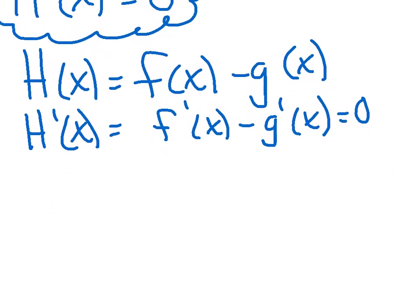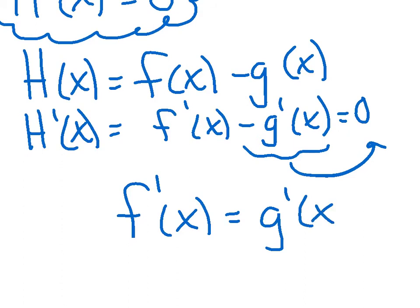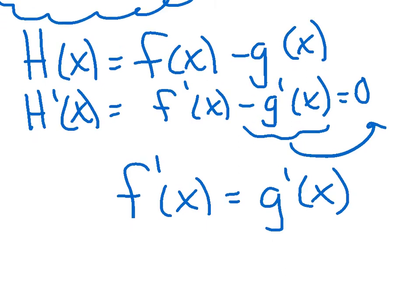All right, now you could leave it like this, but to me what makes the most sense is probably to take this negative value and add it over to the other side. So I'm really going to say f'(x). If I add that over, I would get equals g'(x). And I think that's very simple to solve. I need f' equal to g'.